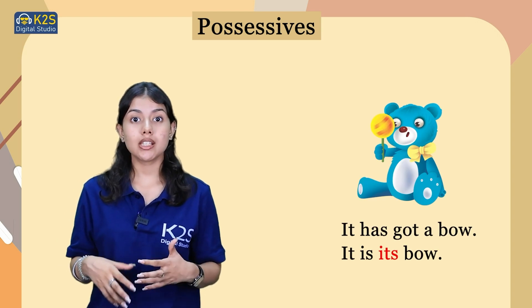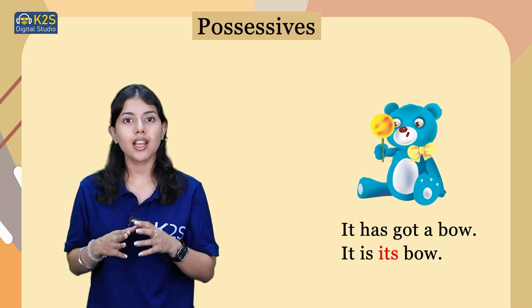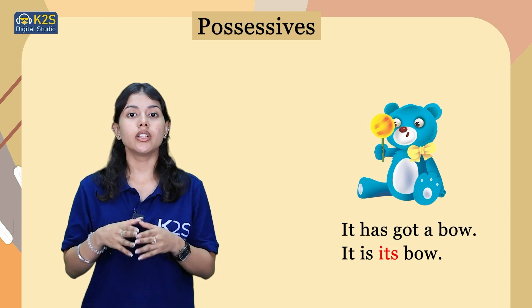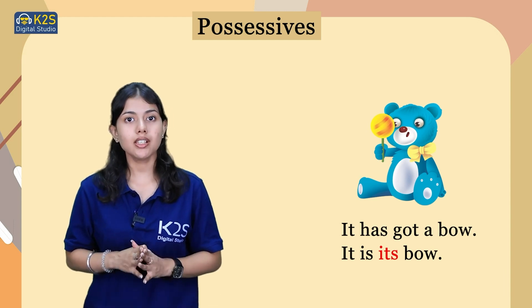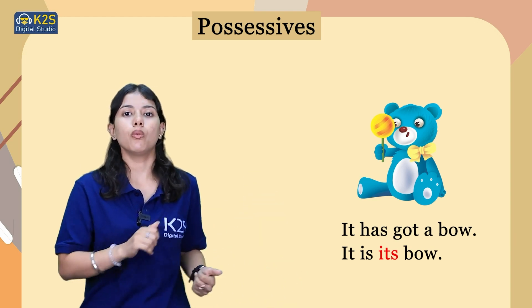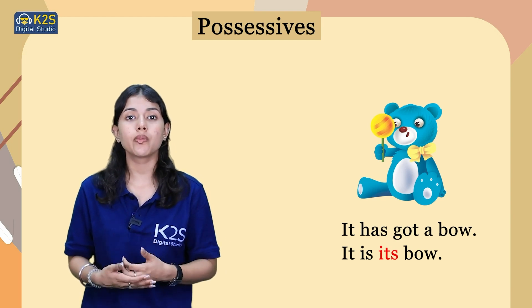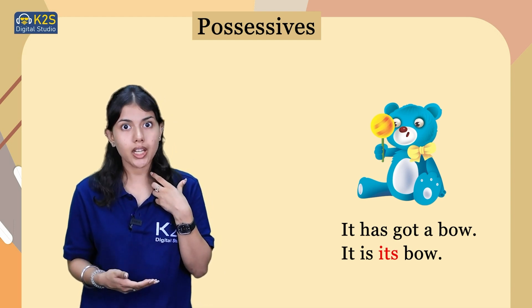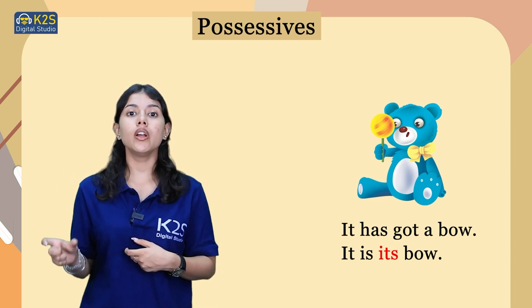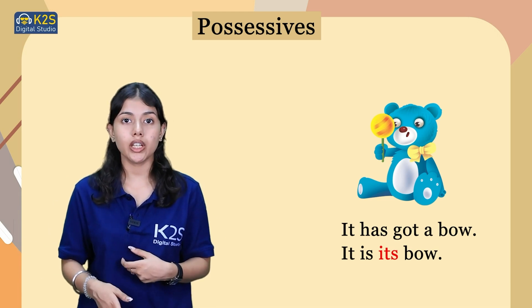In the next picture you can see that there is a teddy bear which has a candy in its hand and also a bow over its neck. The sentence we are forming here is: It has got a bow. It is its bow. The word 'its' denotes the connection between the bow the teddy bear is wearing and the teddy bear. So the possessive here is 'its'.